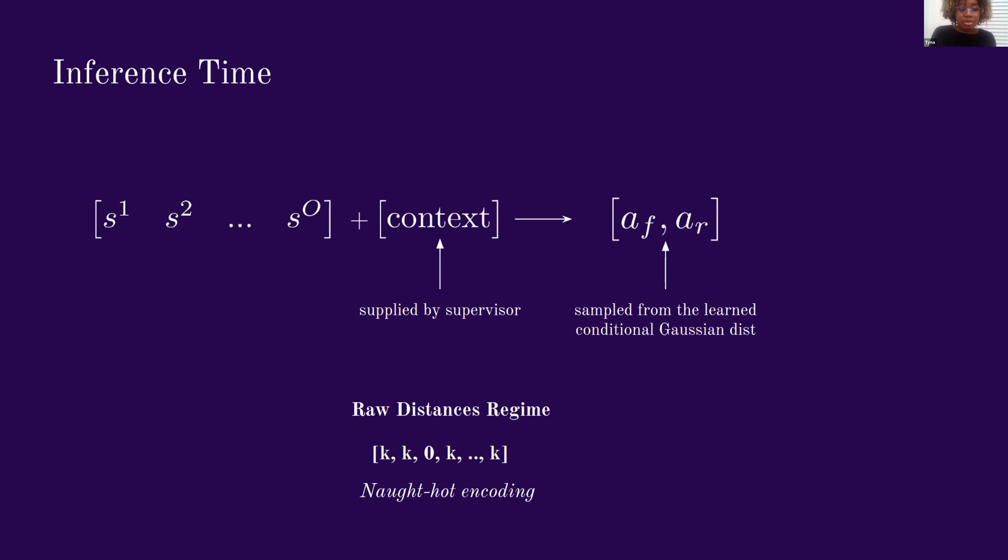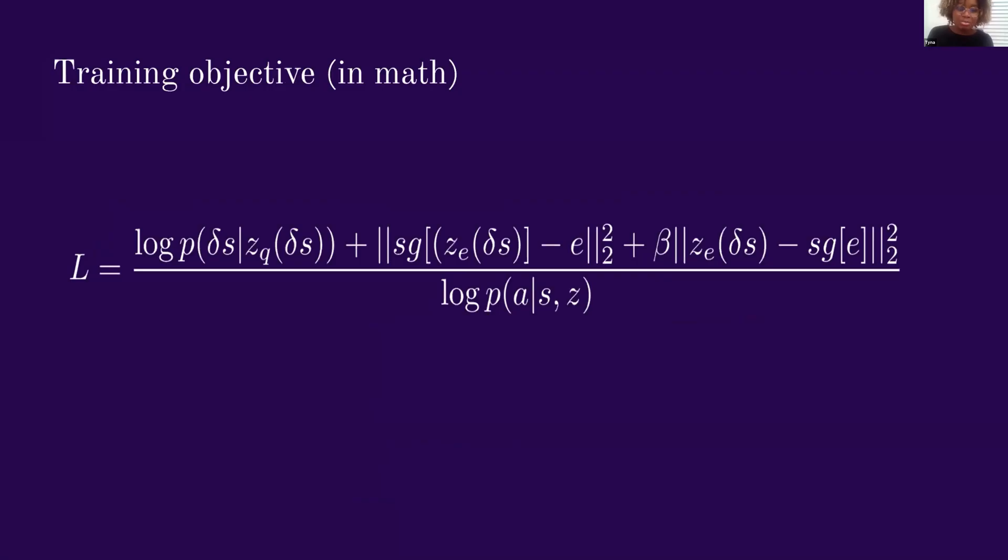So let's look at what the training objective looks like in math and then in words. So here's the training objective. If you don't understand what it means, don't worry about it. For those who recognize it, the numerator is the VQVAE objective, and the denominator is just the conditional policy loss.